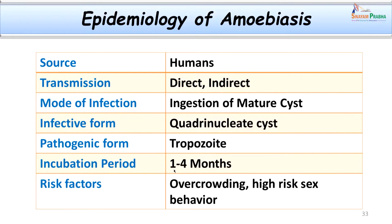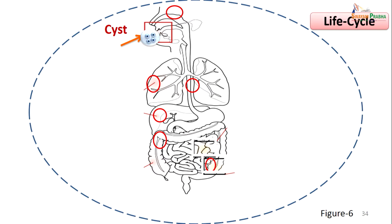Incubation period is 1 to 4 months for extra-intestinal amoebiasis and 1 to 4 weeks for intestinal amoebiasis. Risk factors include overcrowding, poor sanitary conditions, high-risk sexual behavior, malnutrition, pregnancy, and others.